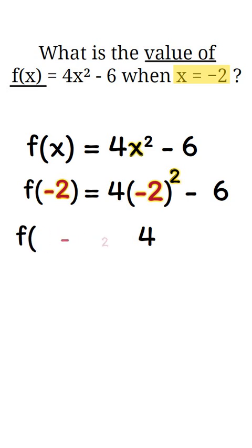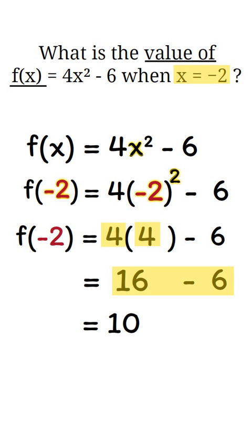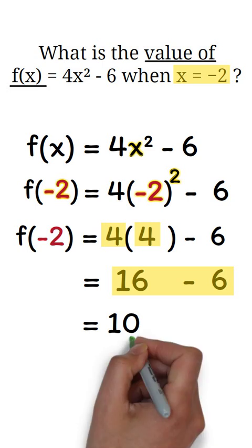Now, we will have f of negative 2 equals 4 times 4 minus 6. We multiply 4 by 4 to get 16. Then we subtract. 16 minus 6 is 10. Therefore, our final answer is 10.